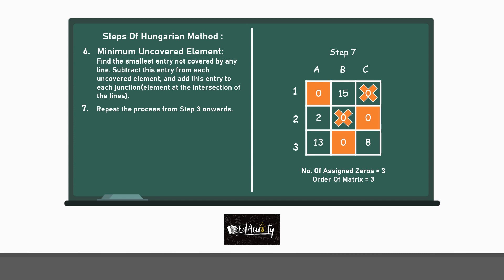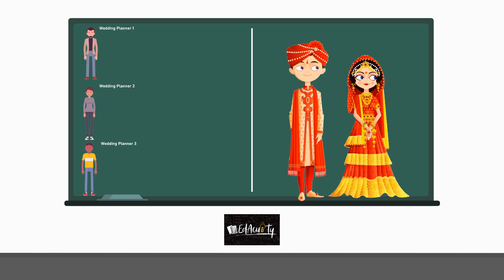This is the original cost matrix. And hence, the optimal assignments are 1 assigned to A, 2 assigned to C, and 3 assigned to B. The total cost can simply be calculated by adding the corresponding costs that is 12 plus 24 plus 40 which is equal to 50 or 50,000 rupees. Thus, we say that the wedding planner 1 is being chosen to provide photography, planner 3 to provide catering, and planner 2 to provide decoration. And this way, the client will have to pay the minimum amount of rupees 50,000 only.